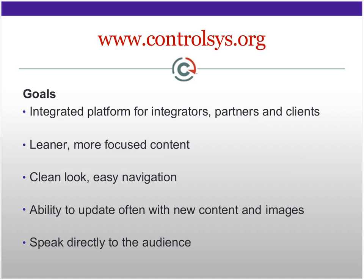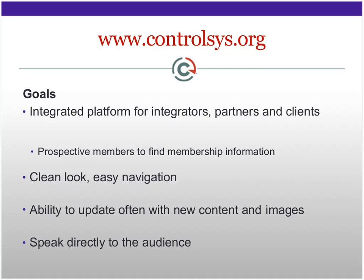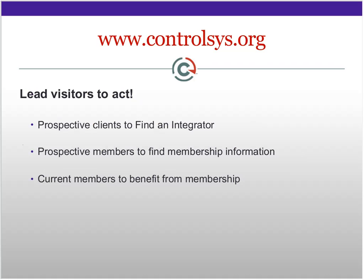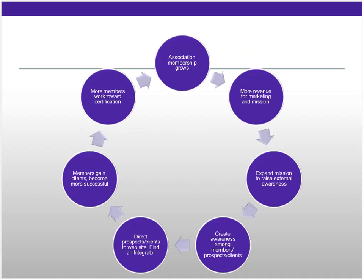We wanted the website to speak directly to the two audiences. Ultimately, any communication should lead visitors to some sort of action. We wanted prospective clients to be able to find an integrator that serves their needs. We wanted prospective members to find membership information and become part of the association. And we wanted our current members to really get the full value out of their membership — one of those being the website that would extend their own marketing reach. This graphic shows how when CSIA and its members succeed, we all succeed and grow.